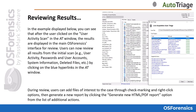In the example here, you can see that after the user clicked on the user activity scan in the auto triage window, the results are displayed in the main OS Forensics interface for review. Users can now review all results from the initial scan by clicking on the blue hyperlinks in the AT window. During review, users can add files of interest to the case through checkmarking and right-click options, then generate a new report by clicking the Generate New HTML or PDF report option from the list of additional actions.